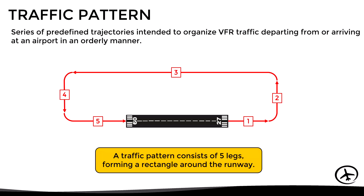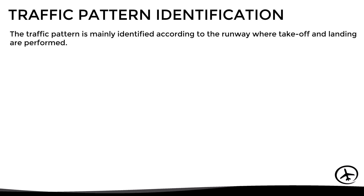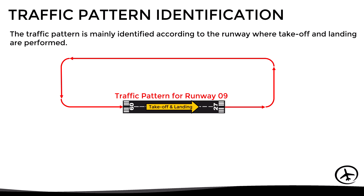As we can see, the pattern is composed of five legs forming a rectangular shape around the runway. There is more than one pattern for a particular runway, so to identify each one of them we use as reference the runway where takeoff and landing are performed.